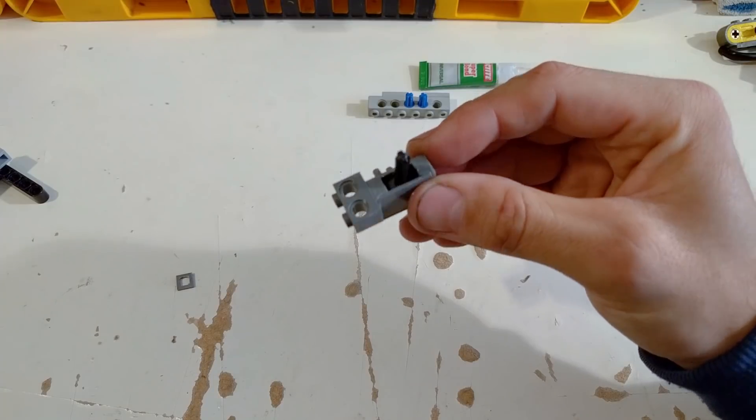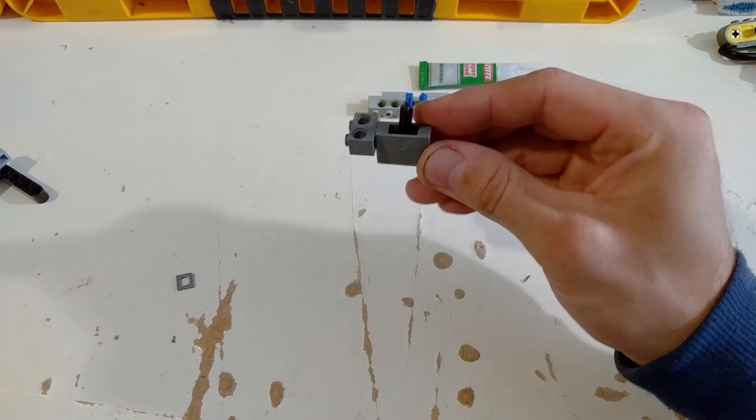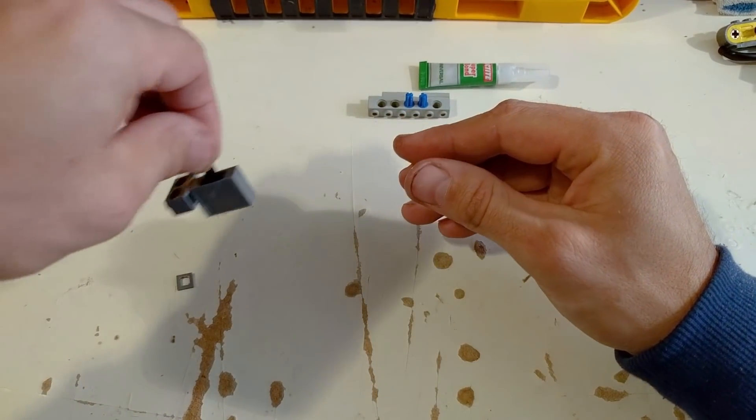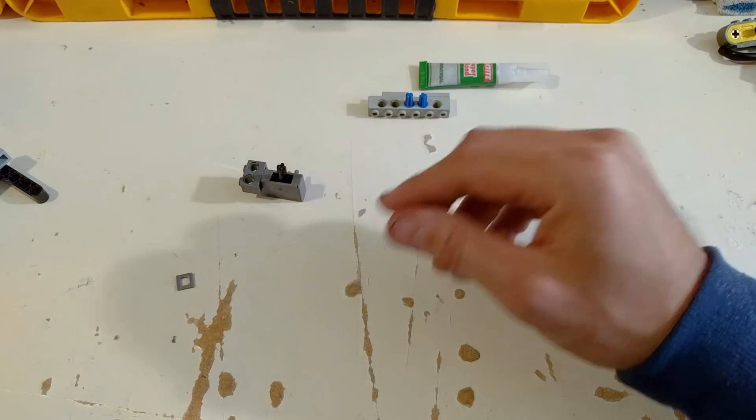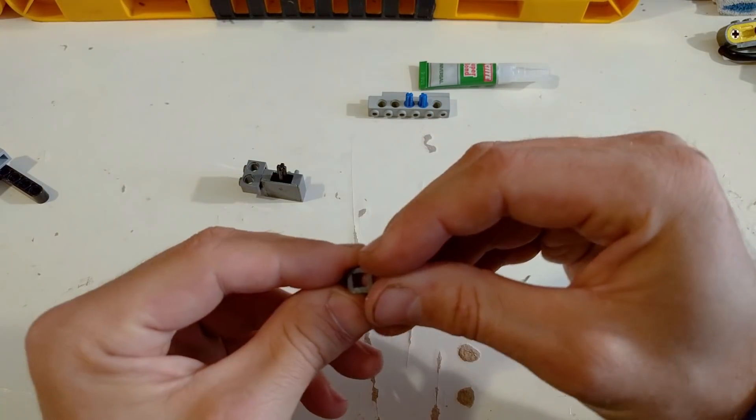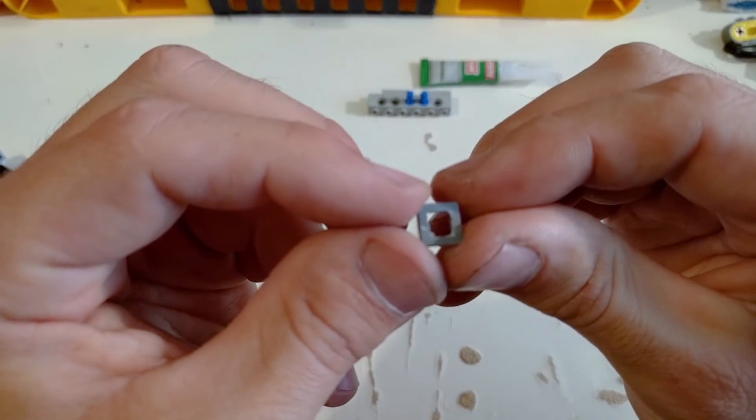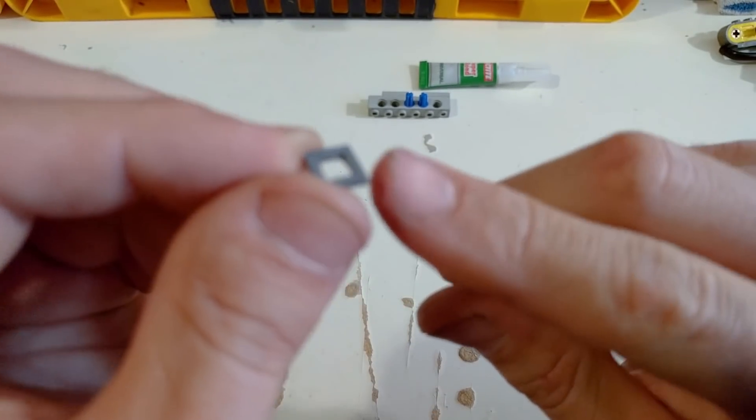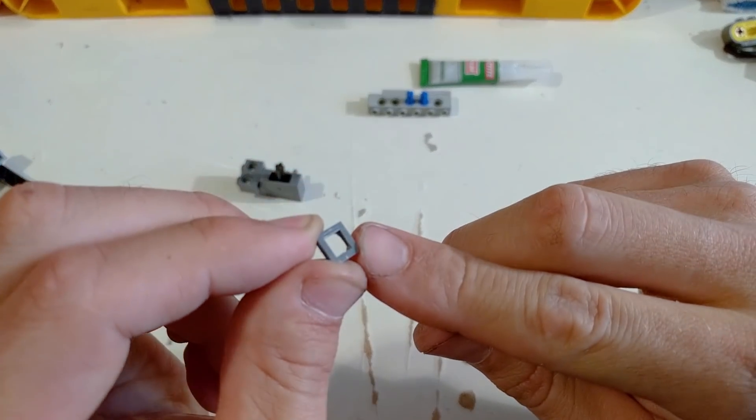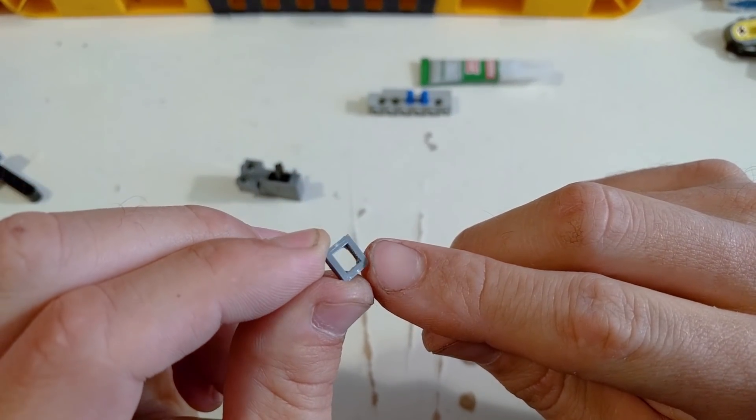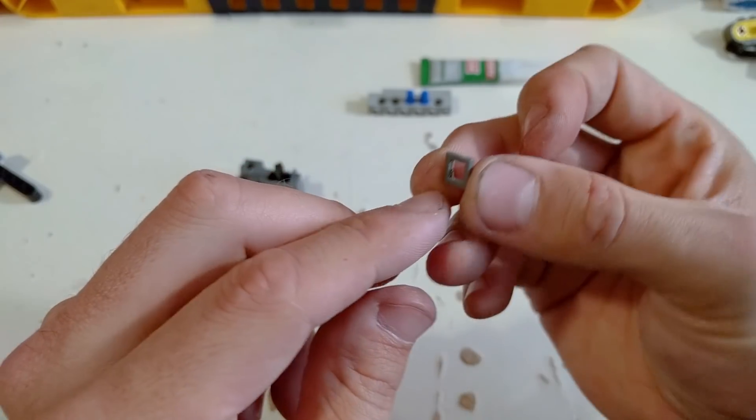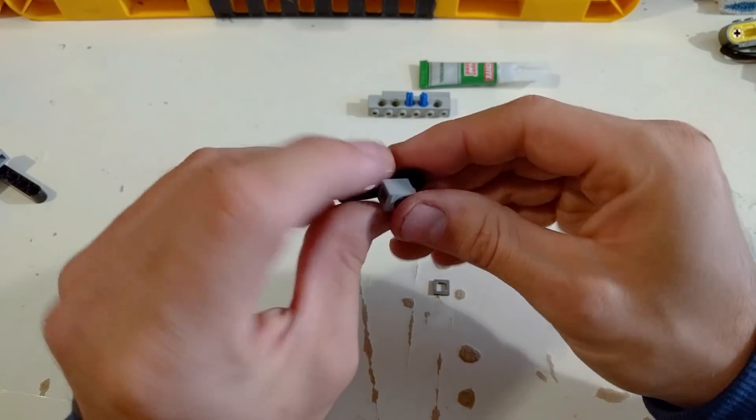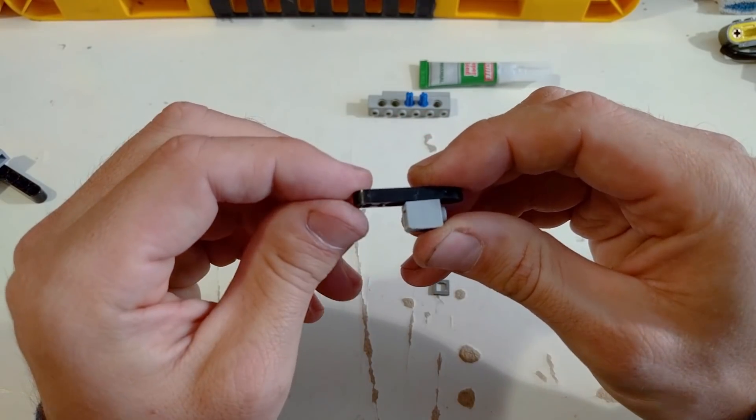And now basically all we have to do is wait until it dries and then we glue on the small part. For this, what I do is I apply glue to the unmodified, to the common, to the unsanded part to maximize the surface area.